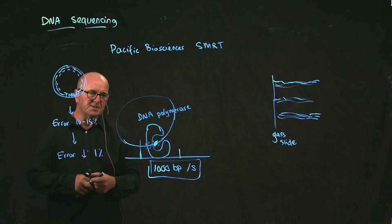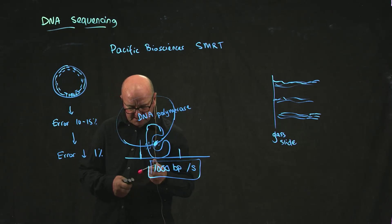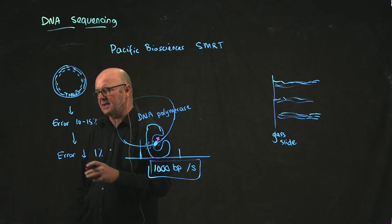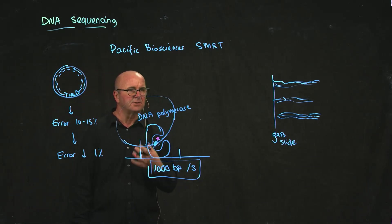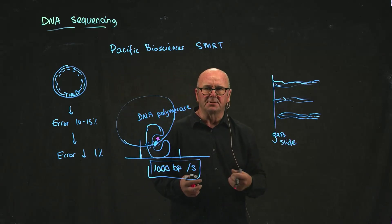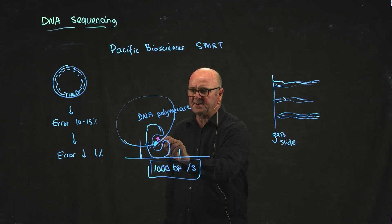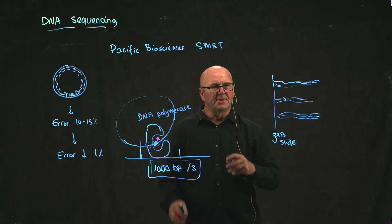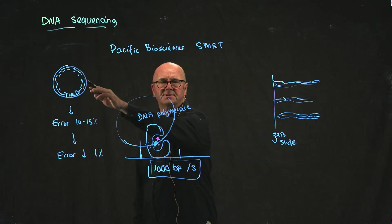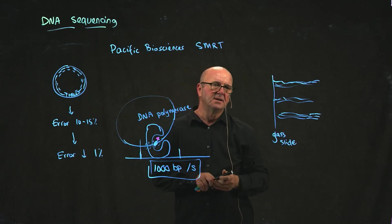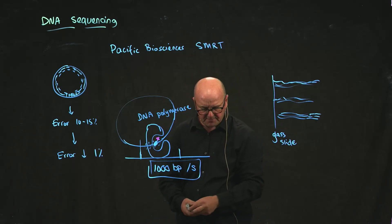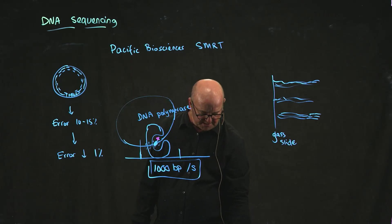The other advantage that PacBio has is that if you have modified DNA - and DNA gets modified in a whole bunch of different ways that I'm not going to talk about, but if you look in a general biology textbook they'll talk about DNA modification - if your DNA is modified, that actually causes the polymerase to pause, and they can detect that in how long it takes to read this amount of sequence. So with PacBio sequencing, you can actually detect different kinds of modifications on DNA as well.